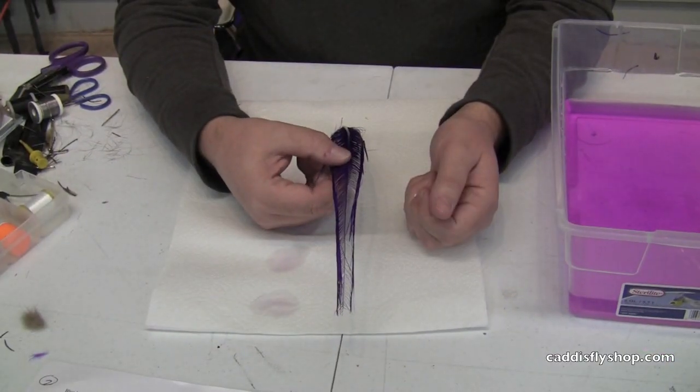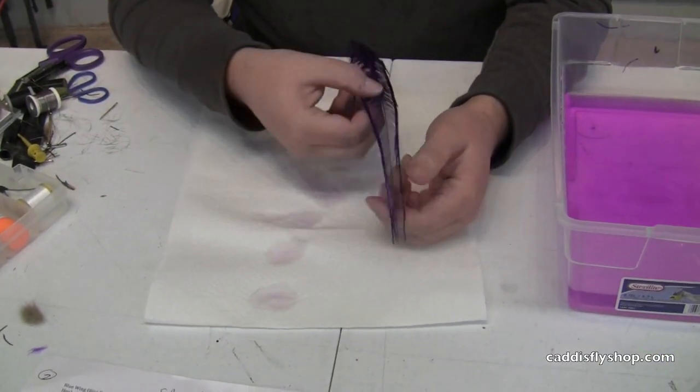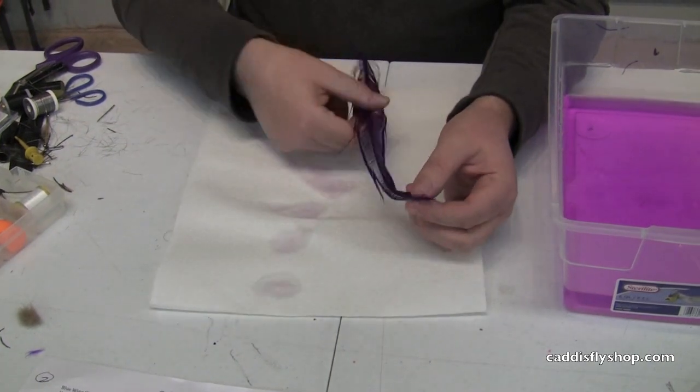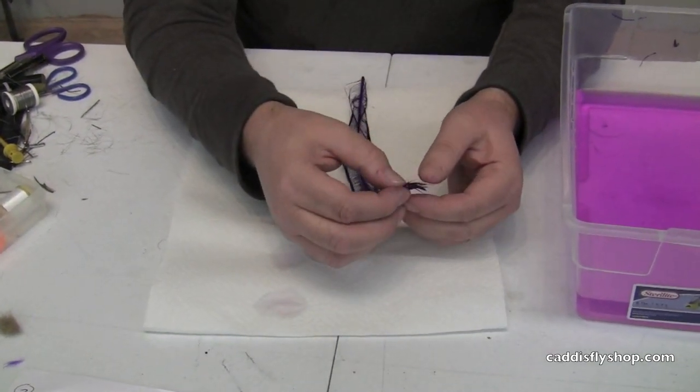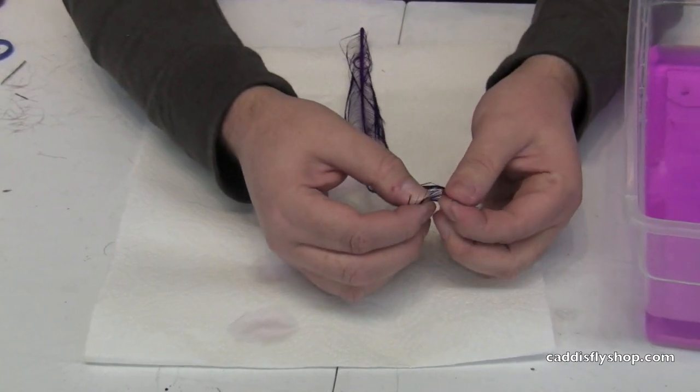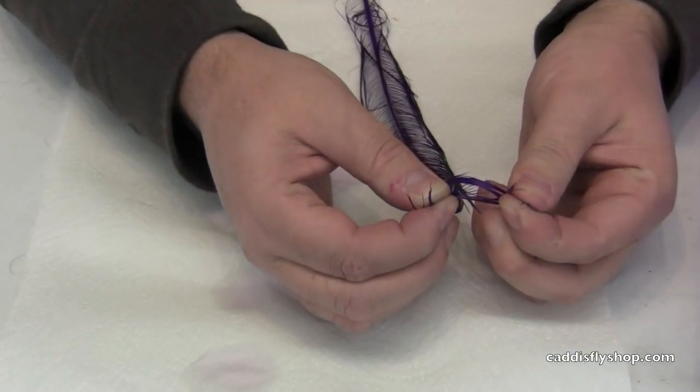So I've got the Rhea feather here and it's still a little damp. It's been soaking for about 35 to 45 minutes. I'm going to start at the top. You can see the stem here. I'm going to grab gently and start pulling and get this started.